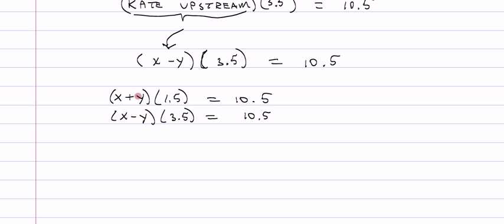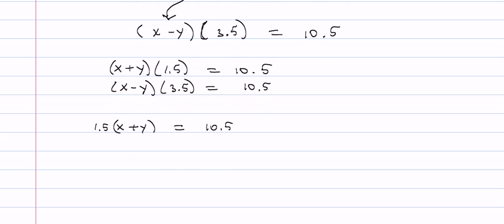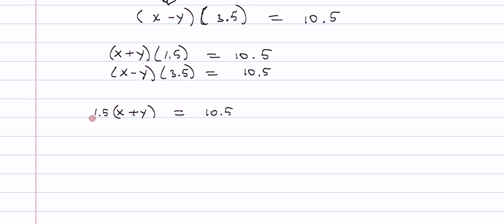So those are the two equations. They look a little different than what we've seen in the past because of the parentheses. And actually what we can do to make our work a little easier, notice how the first equation is x plus y times this 1.5. We can make the work easier by dividing that constant out so we get it out of the way.